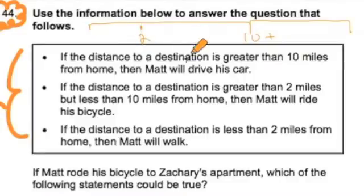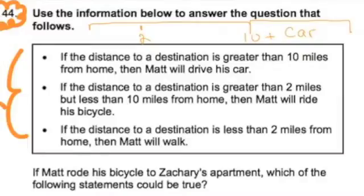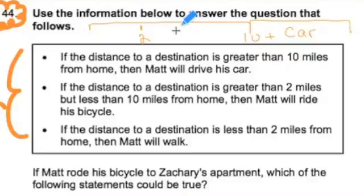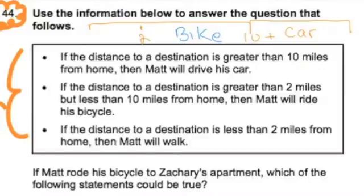It says that anything greater than 10 miles is a car, so anything greater than 10 miles, Matt's driving. Then the second one: if the distance is greater than 2 but less than 10, Matt's riding his bike — so the bike goes in between here, anything between 2 and 10. And finally, if it's less than 2 miles, Matt's going to be walking, so I'll place that in here.